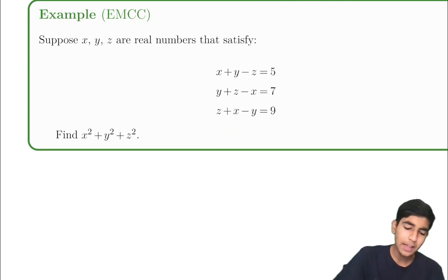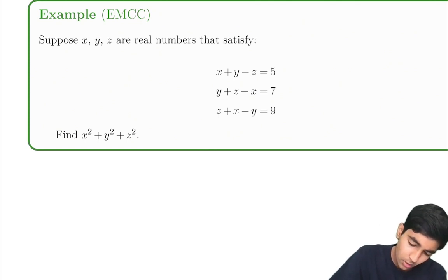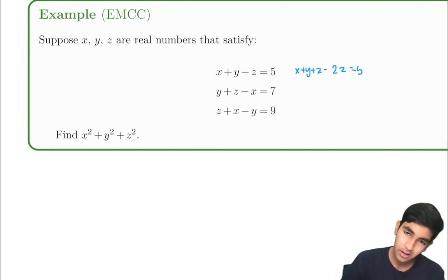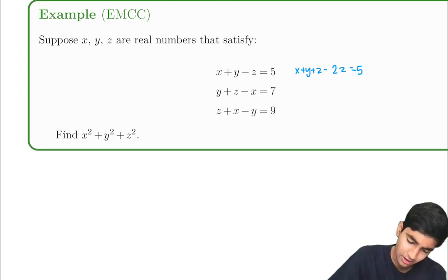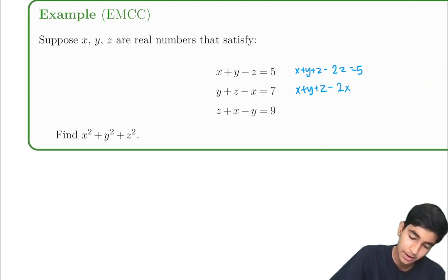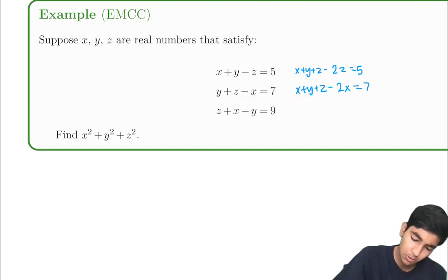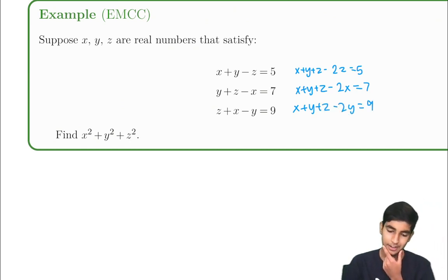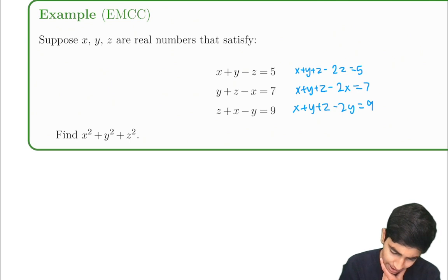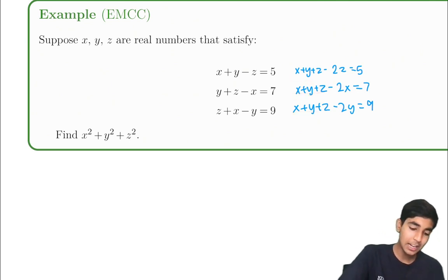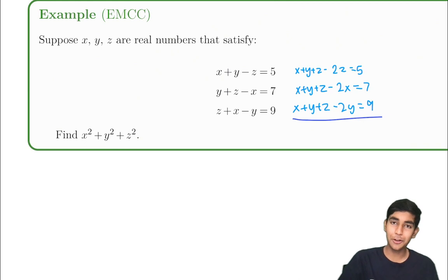What if we rewrite the equations as follows? Rewrite the first as x plus y plus z minus 2z. The second as x plus y plus z minus 2x, because x minus 2x is negative x, equals 7. And the third as x plus y plus z minus 2y equals 9. We've got a bunch of x plus y plus z's — so now we can add all three equations together.